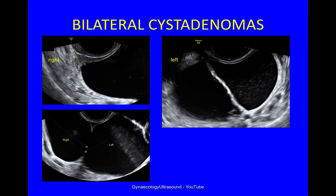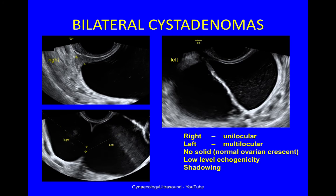Sometimes cystadenomas can be bilateral. On the right side was a unilocular cyst — a normal ovarian crescent at the periphery is not solid material. On the left side was a bilocular cyst with a little bit of low level echogenicity in one locule but anechoic in the other. In the transverse plane you can see both ovaries abutting each other and some shadowing posteriorly. These were bilateral serous cystadenomas.